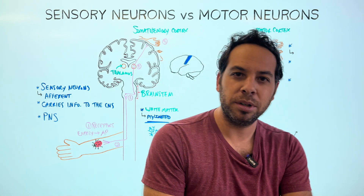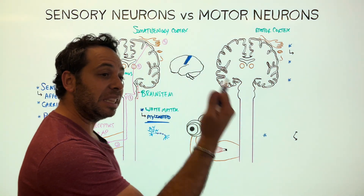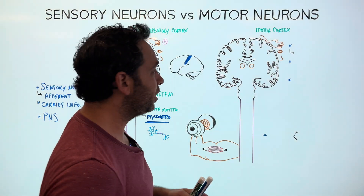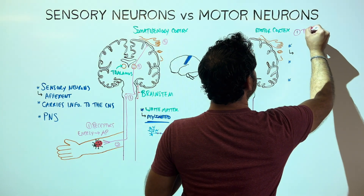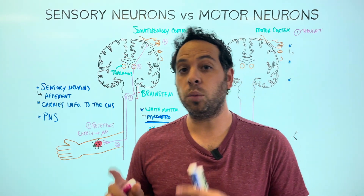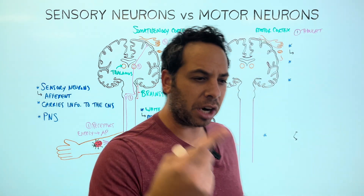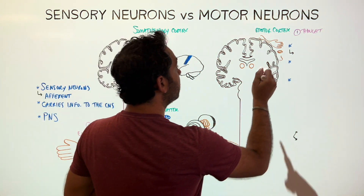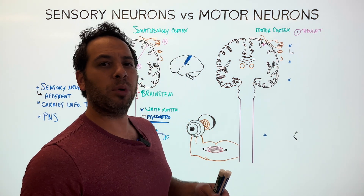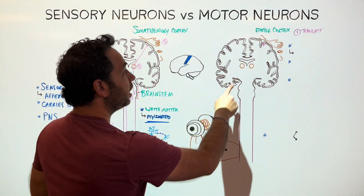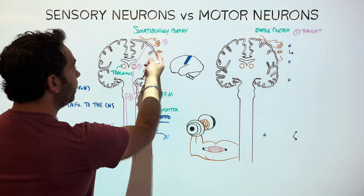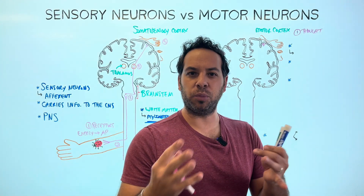Now let's say we want to lift some weights — how would motor neurons work? We begin with a thought: I want to lift something. Thoughts turn into action potentials. This is sent from the motor cortex. Importantly, the cortex is mapped — if I want to move my arm, the part of the motor cortex that deals with my arm activates. Our cortex has very specific regions for each body part.